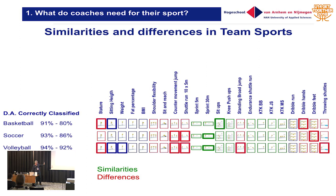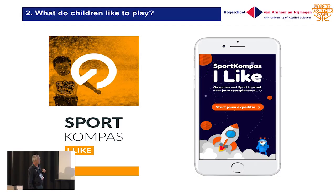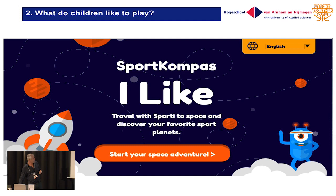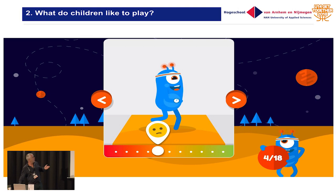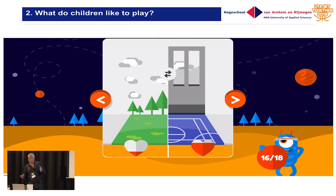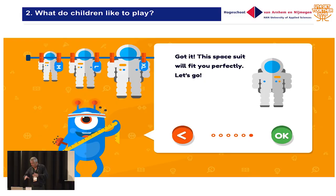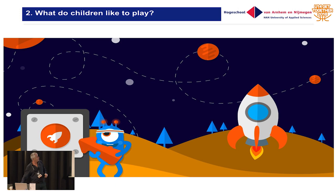What do children like to play? That's probably most important at the age of 8, 9, 10, before they start with their sport. Therefore we developed an app called the Sports Compass iLike — it's a journey through the universe of sports. We take children on a journey. A guide called Sporty asks if you like to run, if you like to play with a ball, if you prefer indoor or outdoor. Then you choose which suit fits for you — a tall suit or a big one. If you answer all these questions, you can launch the rocket, and you come into a space with all your sports. That's the main thing of the app.